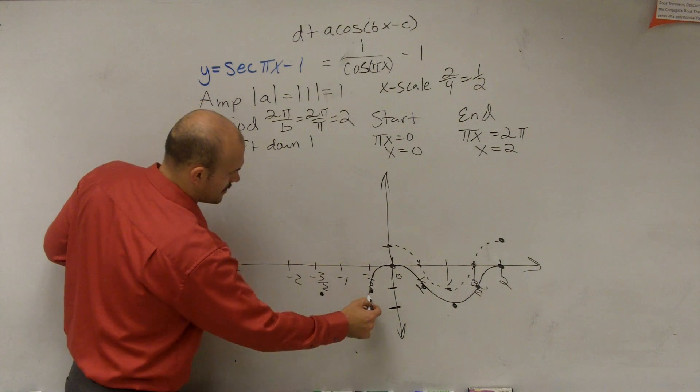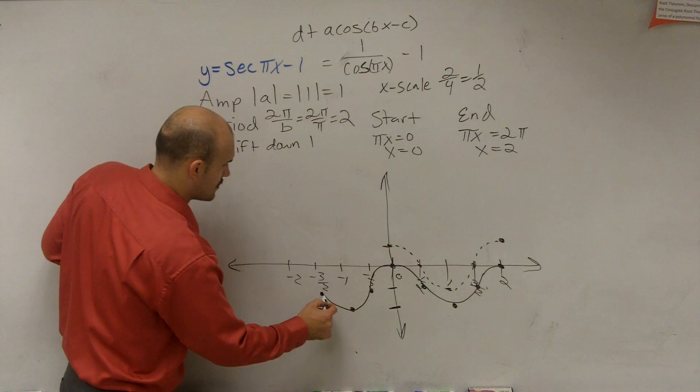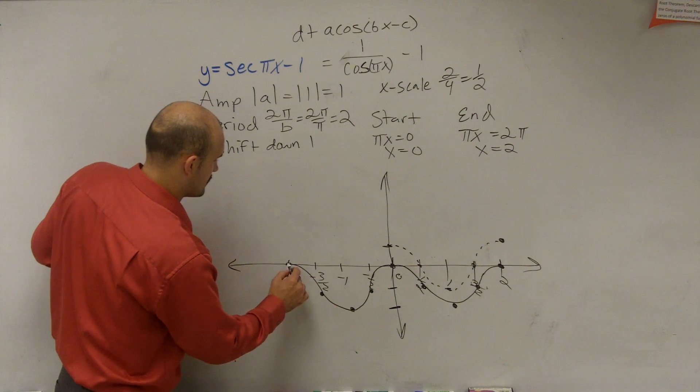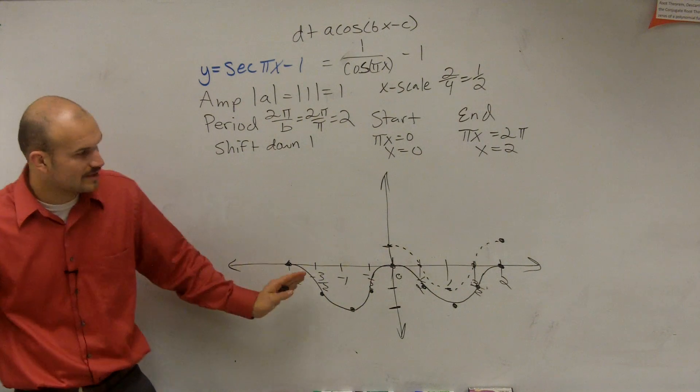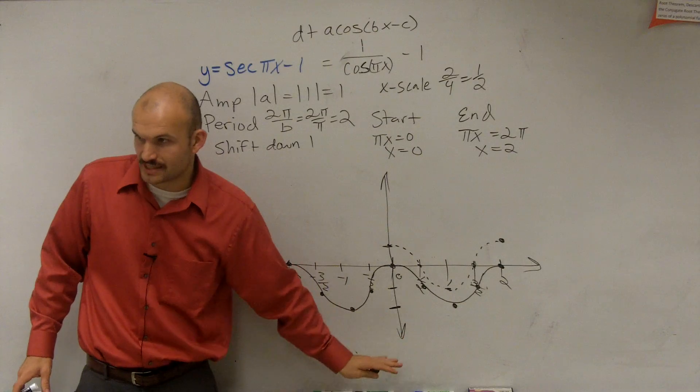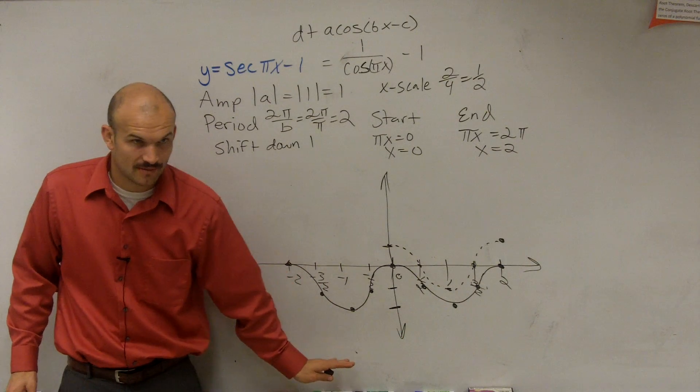And then I can continue that in the negative direction. So we can go down, up, come back up, and then to there. So this is what cosine looks with a vertical translation shifted down. Does everybody follow me with this?